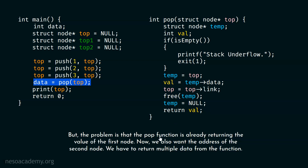Now we also want the address of the second node after deleting the top most element. We want to update the top pointer with the address of the second node, so it is important to return that address from the pop function. Now we have to return multiple data from the function — the value of the first node and the address of the second node — but this is not possible. We cannot write something like return val, top. We cannot return multiple values from the pop function.